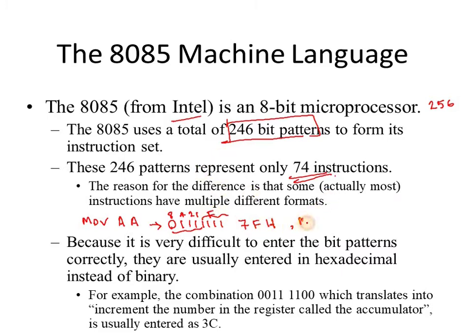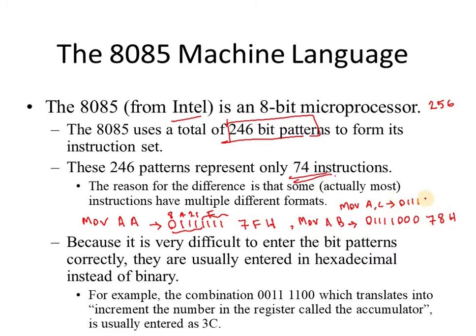The next instruction, MOV A,B — moving B register data into the accumulator — uses opcode 01111000, which is 78H. Similarly, MOV A,C has opcode 01111001, which is 79H.